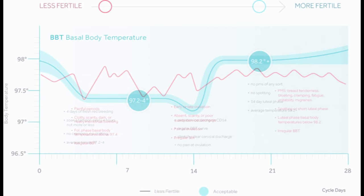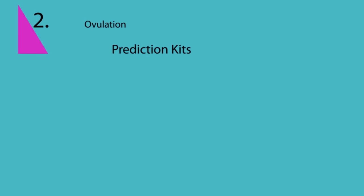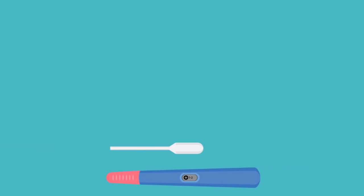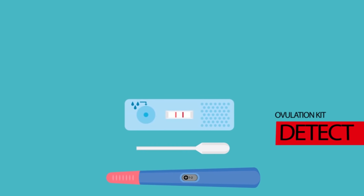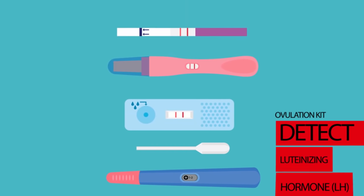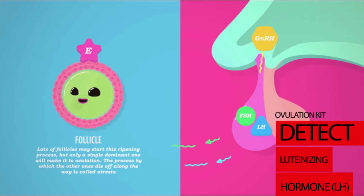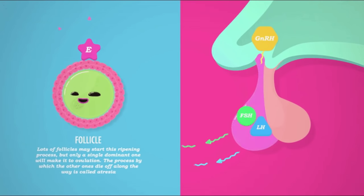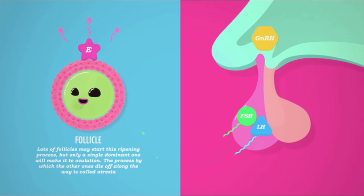By identifying the temperature rise, it can help you identify your ovulation. Ovulation predictor kits is another method to detect ovulation, which relies on luteinizing hormone, which drastically increases in concentration and triggers ovulation.